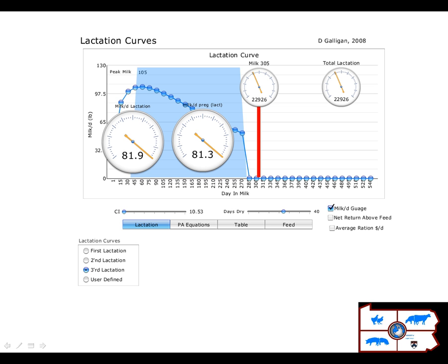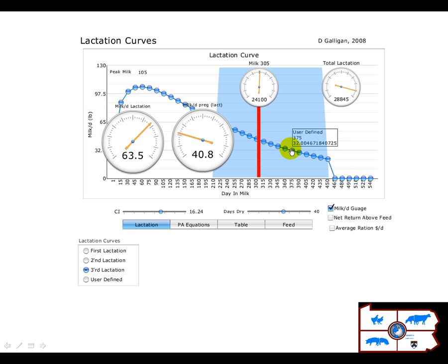Now, as we start to move that calving interval out further and further, in other words, the cow is spending more time per period with lower milk yields, notice that the disparity between the average over the entire lactation versus the marginal that occurs when she gets pregnant.